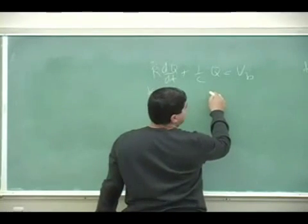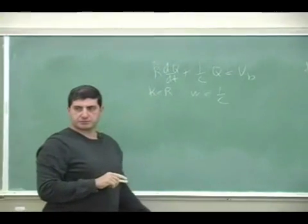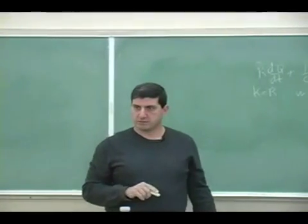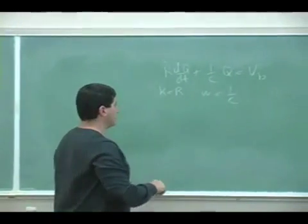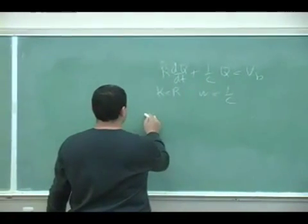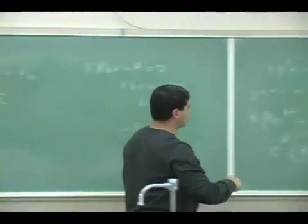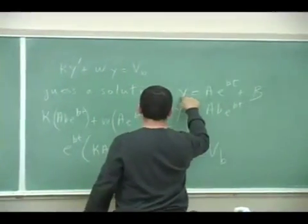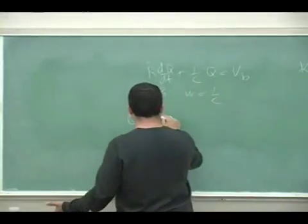And my W was 1 over C, right? So what's the final solution here? My final solution is Q is equal to—so the Y stands for the Q—the Q is equal to A. A could be anything it wants for now.